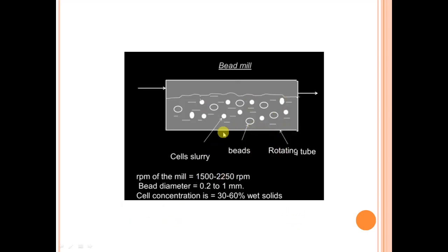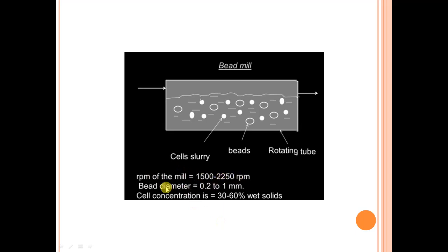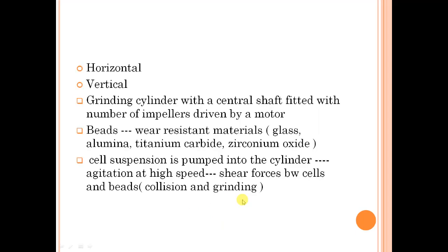Coming to the working of the bead mill: you have the system, the beads, and the cell slurry. The RPM at which the bead mill usually rotates is high — around 1500 to 2250 RPM. The bead diameter is usually in the 0.2 to 1 mm range. We also have to optimize conditions for how much bead and how much cell suspension is required, which is done on a trial-and-error basis. For a typical case: RPM of 1500 to 2250, bead diameter of 0.2 to 1 mm, and cell suspension of 30 to 60 percent weight solids.